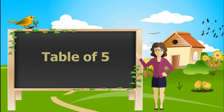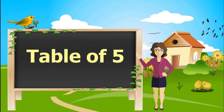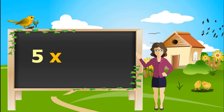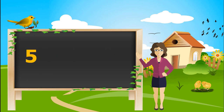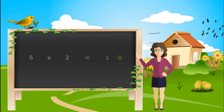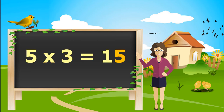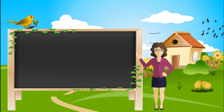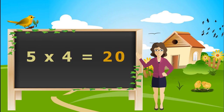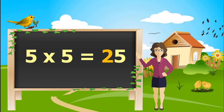Let's learn table of 5. 5 ones is 5. 5 twos are 10. 5 threes are 15. 5 fours are 20. 5 fives are 25.